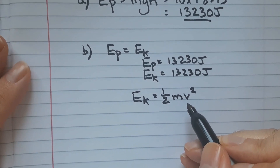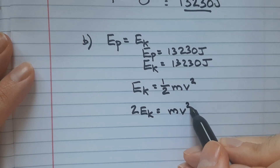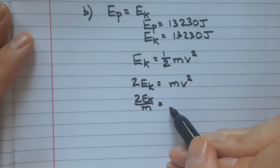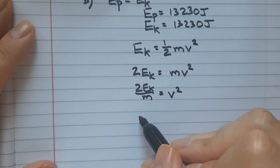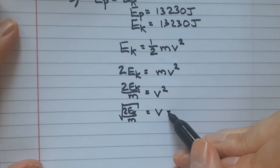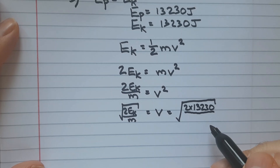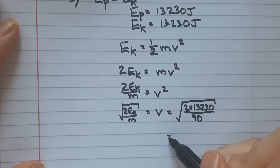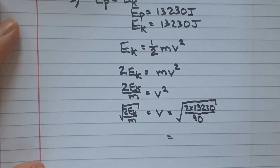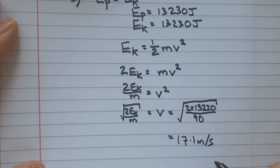We want to find the velocity, so let's rearrange. Firstly, multiply both sides by 2: 2 times kinetic energy equals mass times velocity squared. Then divide both sides by m: 2 times kinetic energy divided by mass equals velocity squared. Finally, square root both sides: velocity equals the square root of 2 times kinetic energy over mass. In this case, kinetic energy is 13,230 and mass is 90 kilograms, so we do the square root of (2 × 13,230 ÷ 90), which gives an answer of 17.1 metres per second.